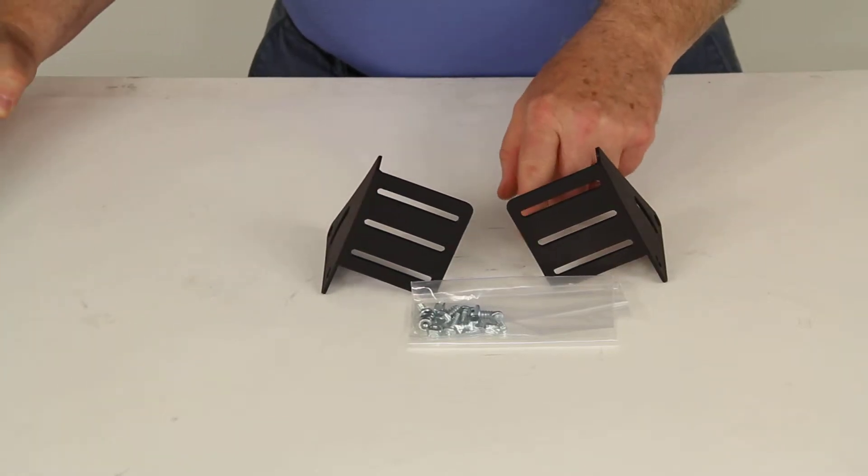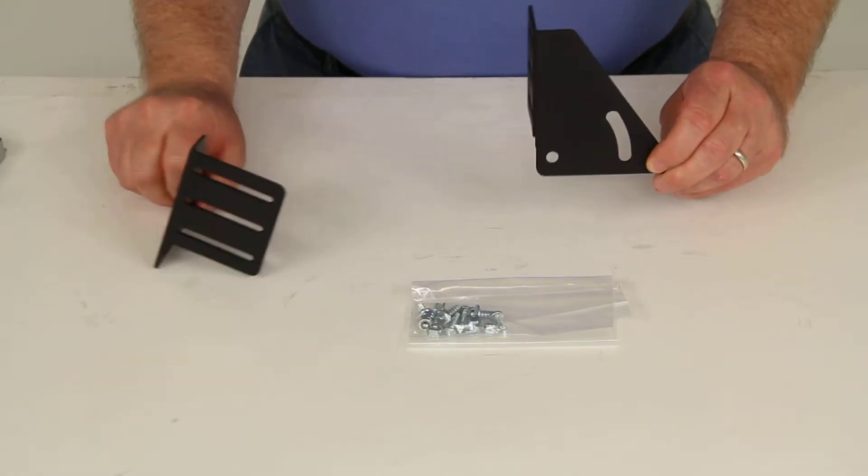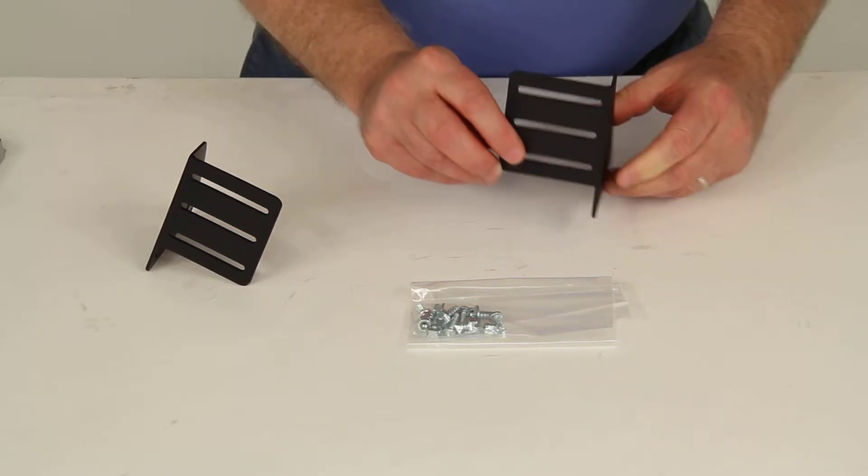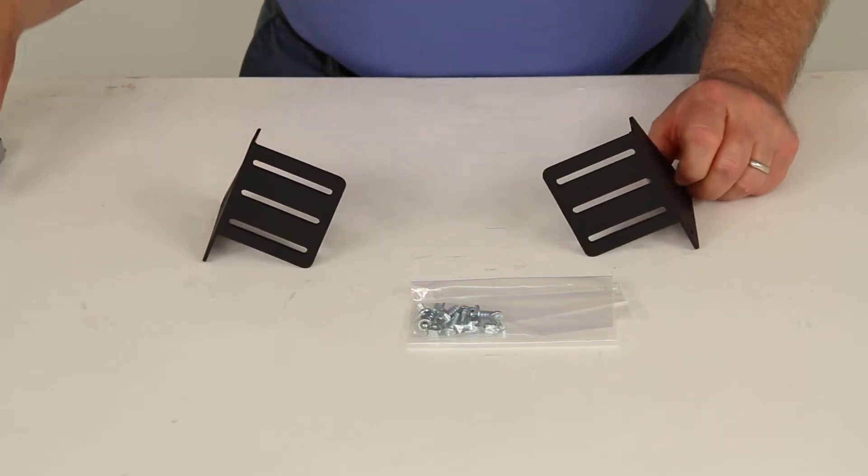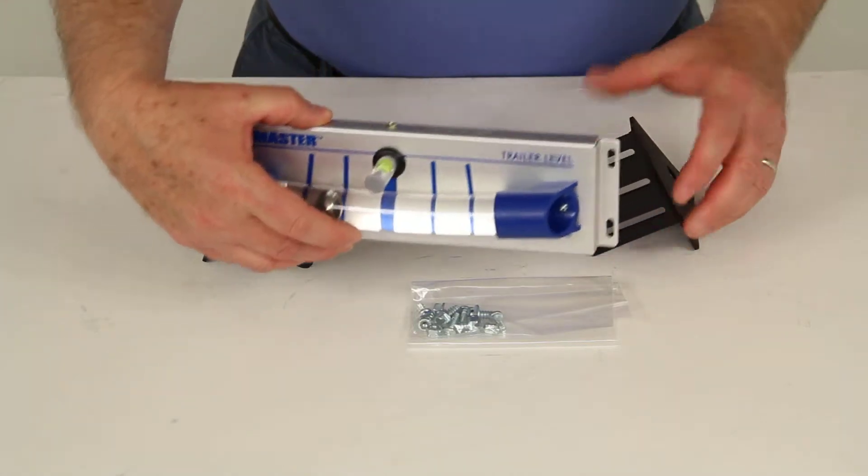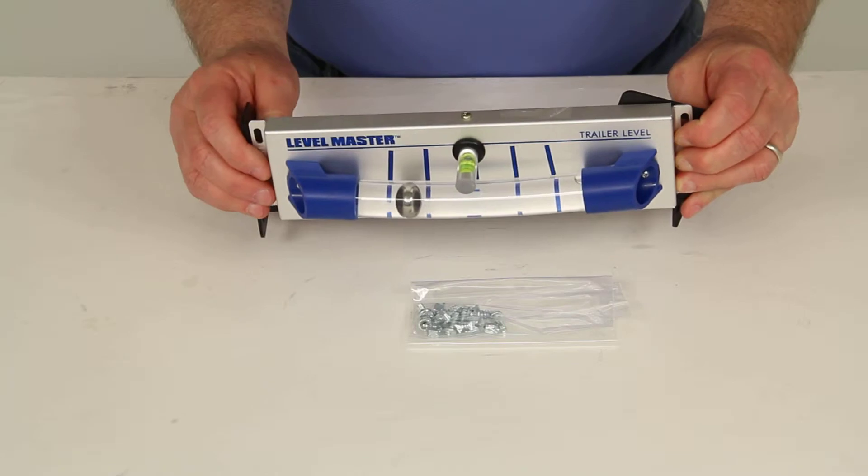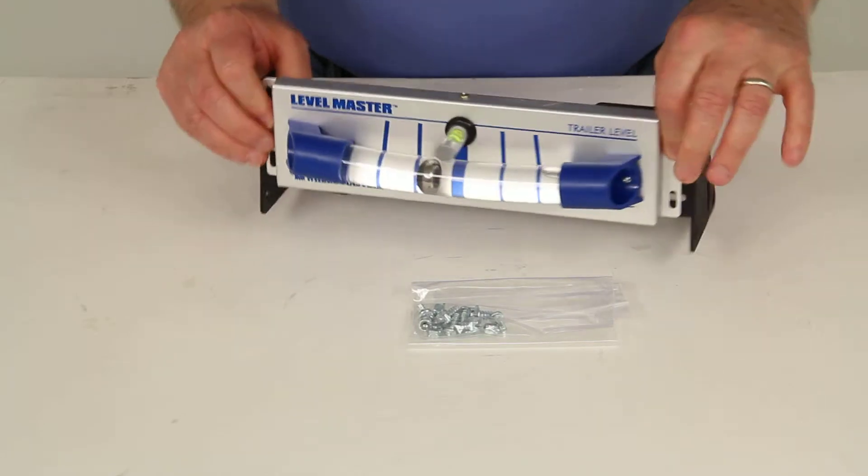And what these brackets will allow, as you can see here on the side, it has the two holes, and it also has a hole that slides up and down. So basically what these brackets would allow is you would take your level and you can mount it to these brackets right here using the hardware that comes with the bubble level.